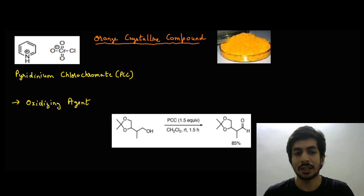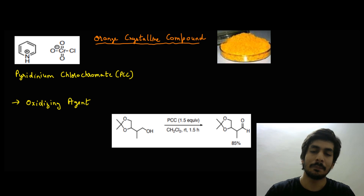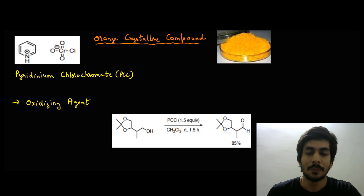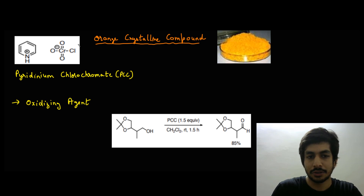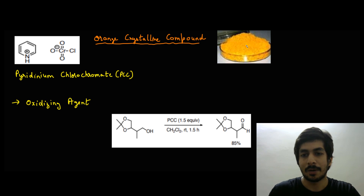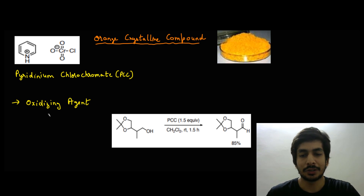There are multiple transformations PCC can show, but from an entrance exam point of view, certain transformations are more relevant. This is the structure of pyridinium chlorochromate — a pyridine ring with a positive charge on the nitrogen and a chlorochromate group. It is an orange crystalline compound. It acts as an oxidizing agent: for secondary alcohols, it oxidizes them to ketones.